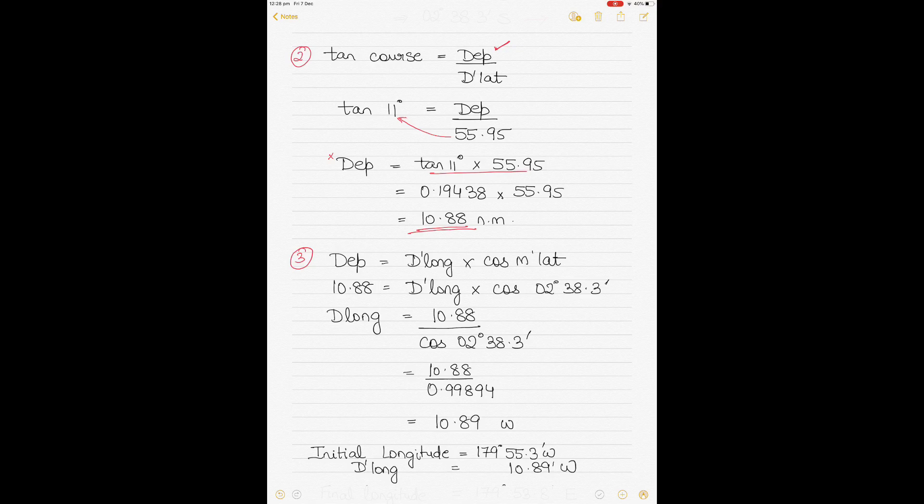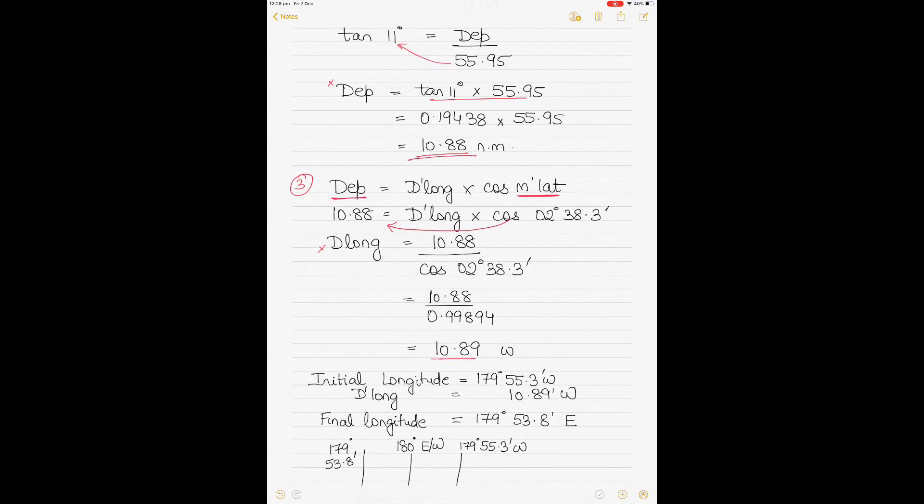Once we've got the departure, we can calculate our d long because departure equals d long times cos of mean latitude. We have calculated our mean latitude above. We know our departure. Put the values in the equation, keep the unknown on one side. Take the known to the other side—multiplication going on the other side becomes division. This shows that 10.88 divided by cos of the mean lat will give us our d long value as 10.89. We name it west because the vessel was on a north westerly course.